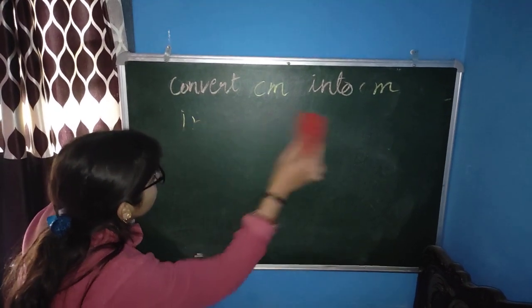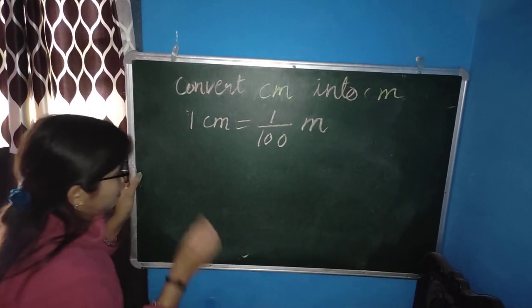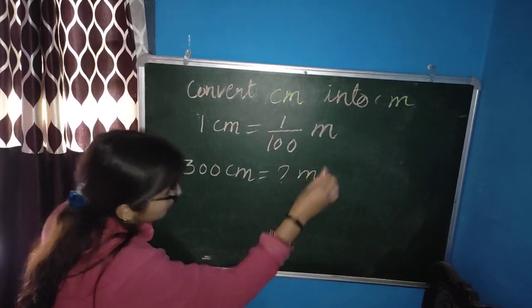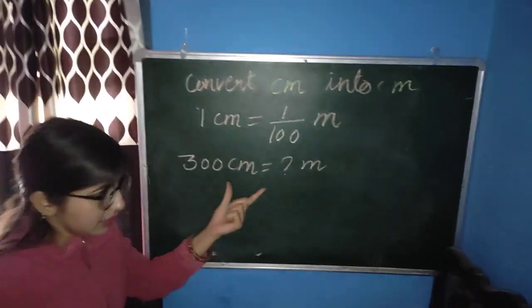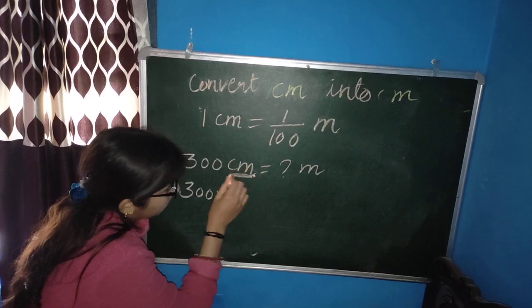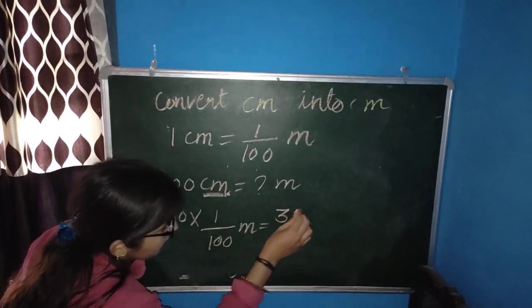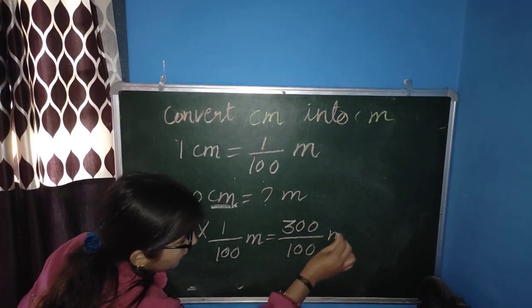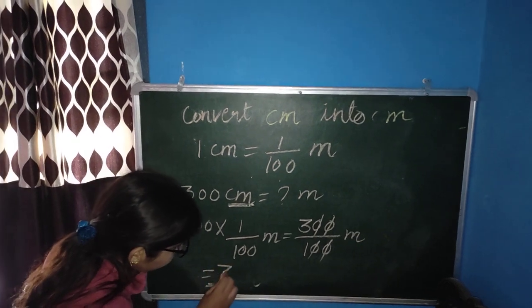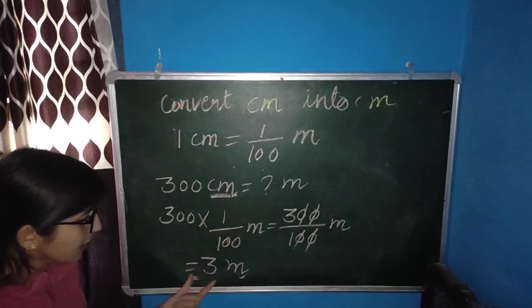Now we apply the formula: 1 cm is equal to 1 by 100 meter. We convert 300 cm into meter — how many meters are in 300 cm? We write 300 multiplied by the value of 1 cm, which is 1 by 100 meter. So we get 300 divided by 100. The first zero cancels the first zero, the second zero cancels the second zero, leaving only 3. So the answer is 3 meters.